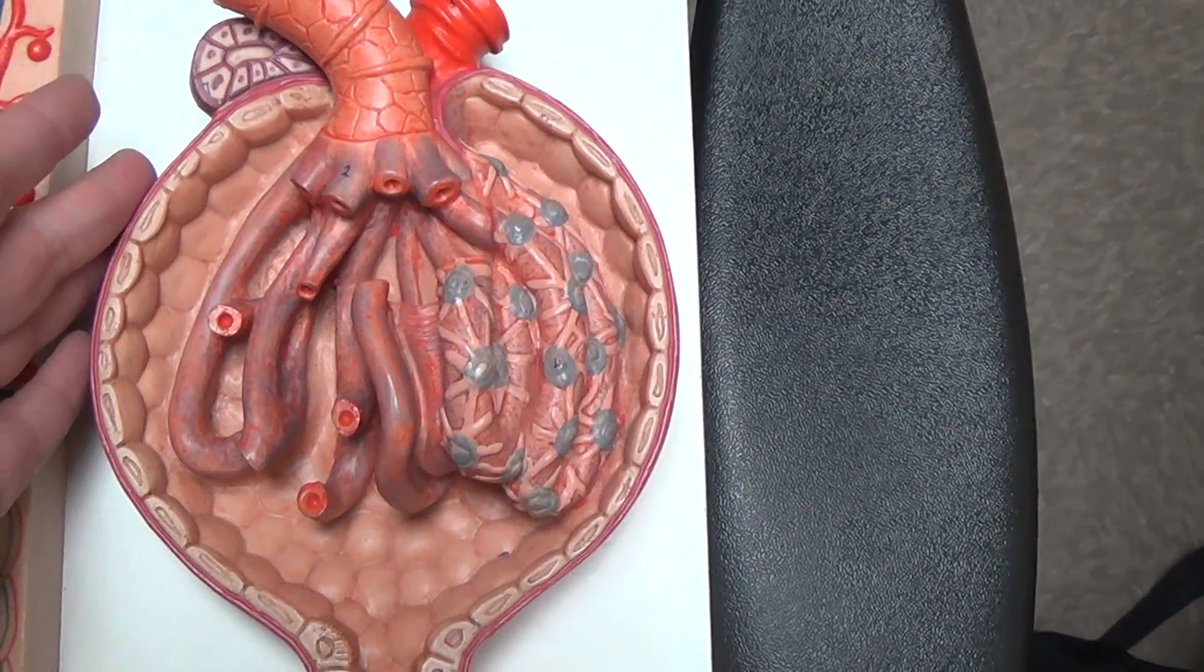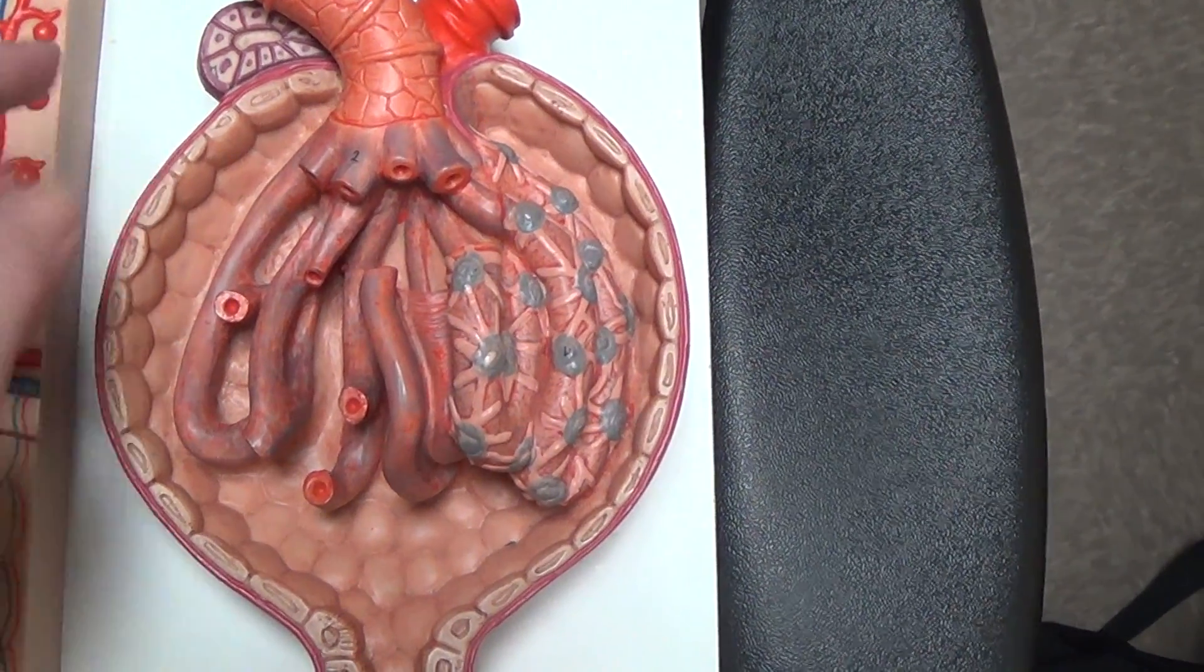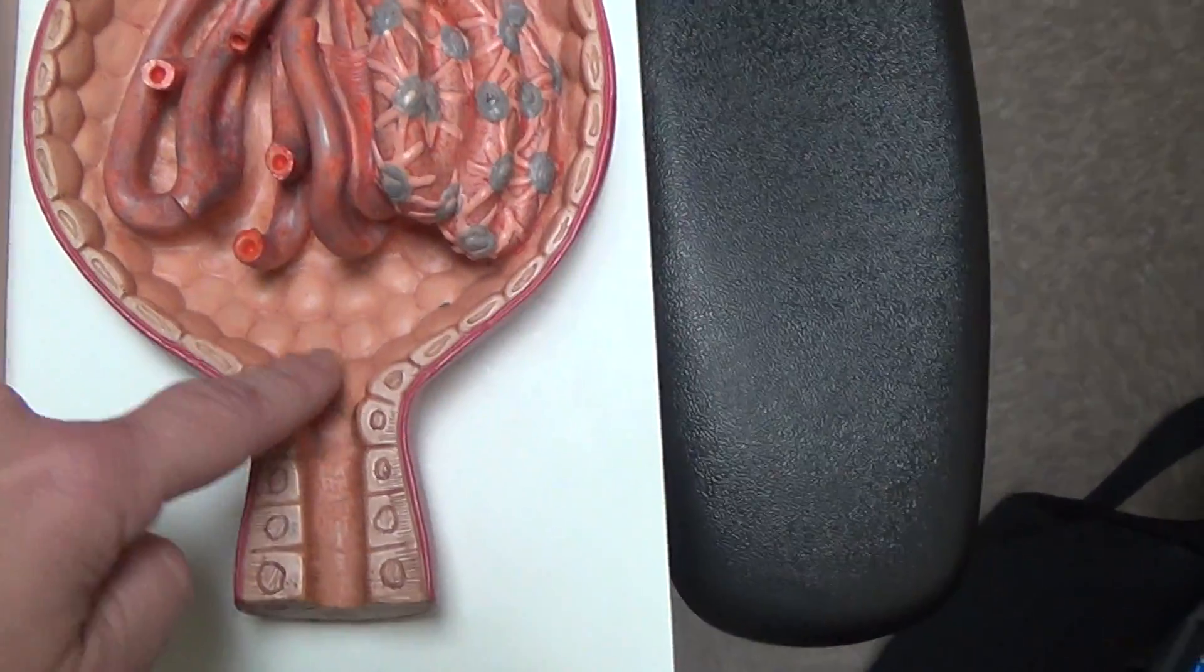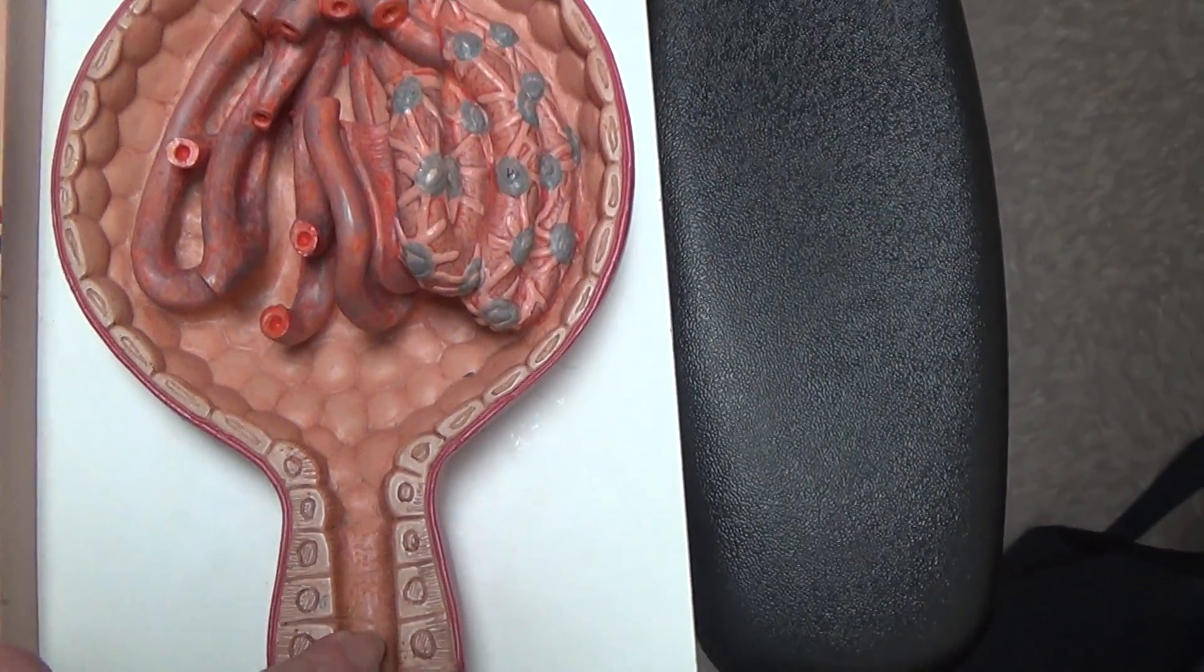This is the Bowman capsule or glomerular capsule. This is the space where the filtrate accumulates and then moves towards the proximal convoluted tubule here.